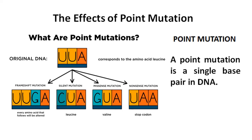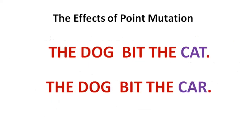Now let us see a simple analogy that can illustrate point mutations. Read the sentences below to see what happens when a single letter in a sentence is changed. The first sentence is: 'The dog beat the cat.' The second one is: 'The dog beat the car.' As you can see, changing a single letter changes the meaning of this sentence. A change in a single nitrogen base can change the entire structure of a protein.